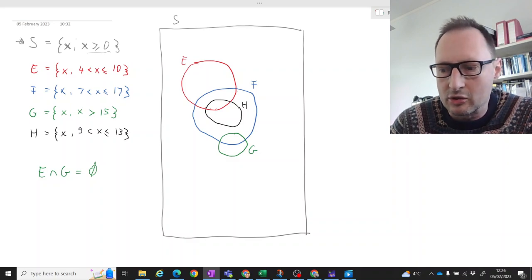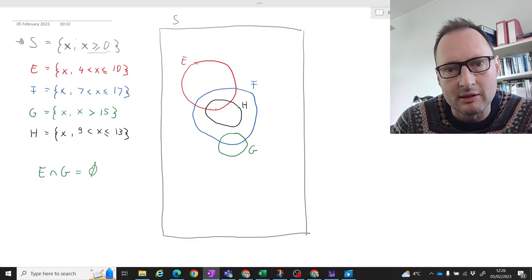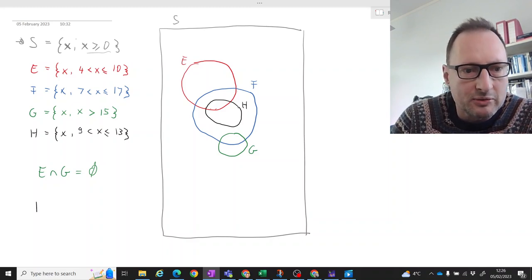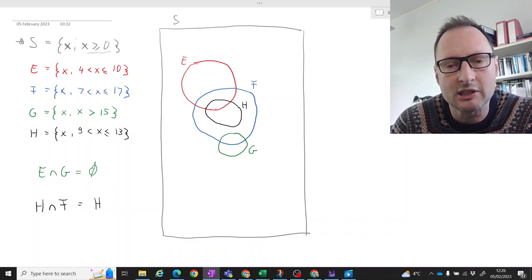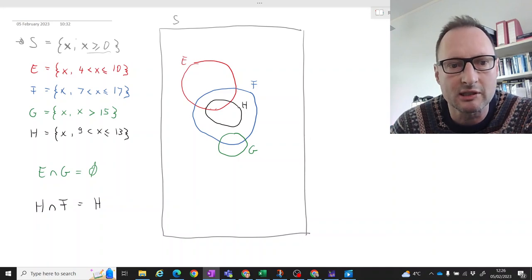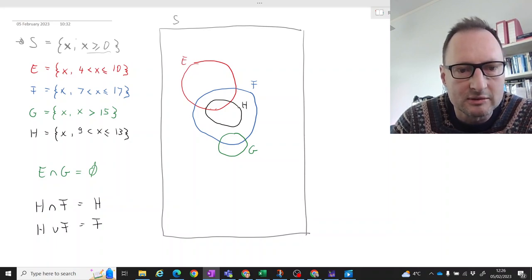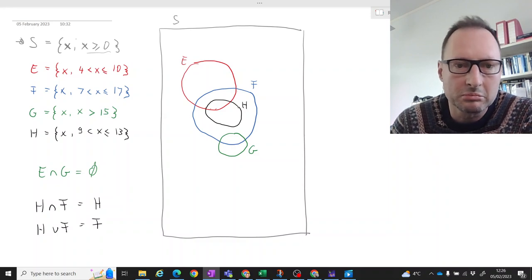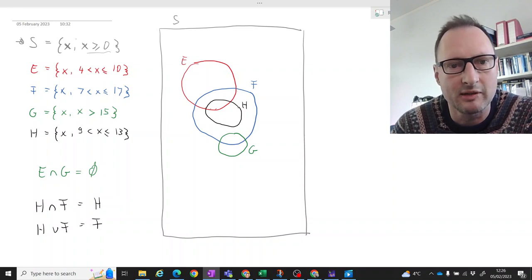Okay. So for instance, what does that mean here? The intersection between H and F is just H again. All the values in H are the intersection between H and F. And what about the union between H and F? Well, that is F. Okay. Because an outcome in either H and F is the same as an outcome in F.